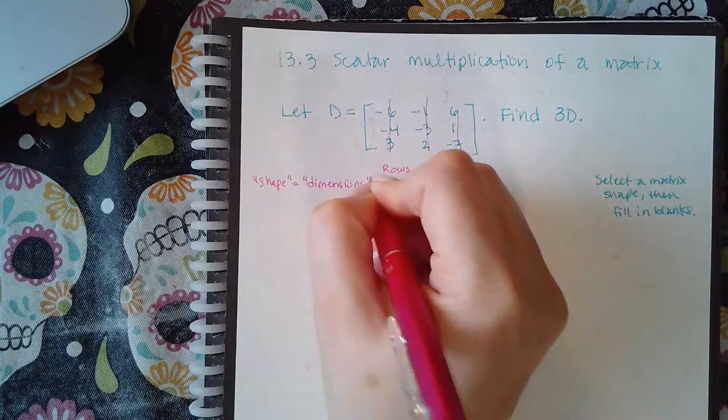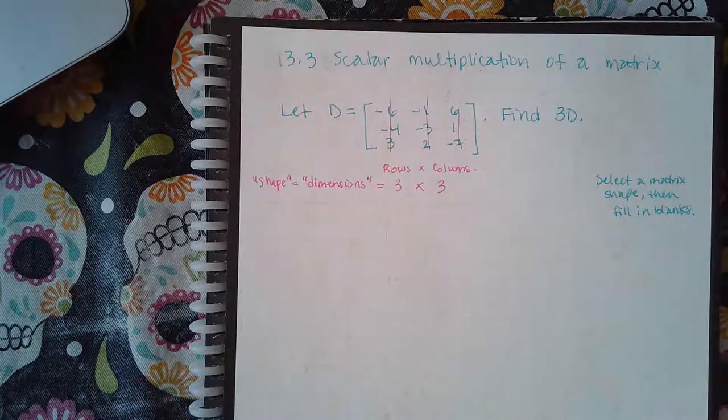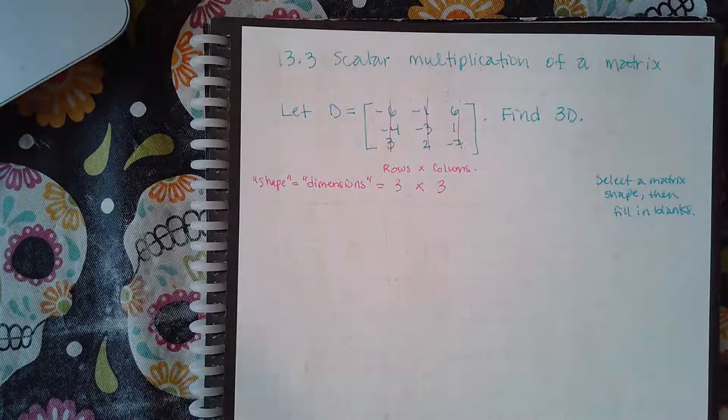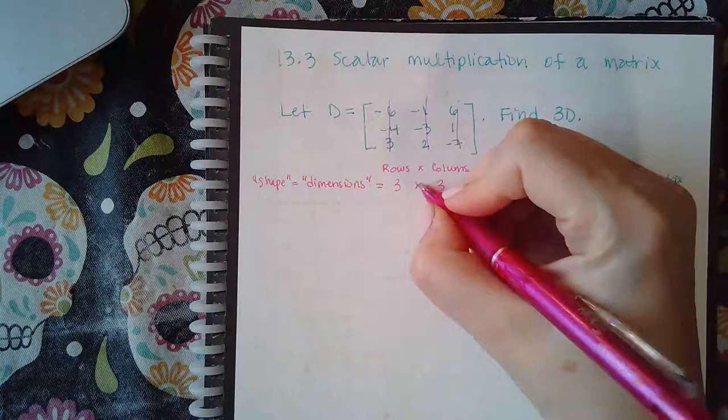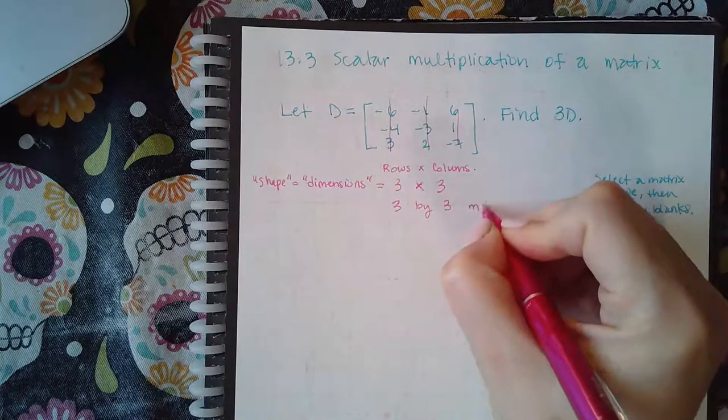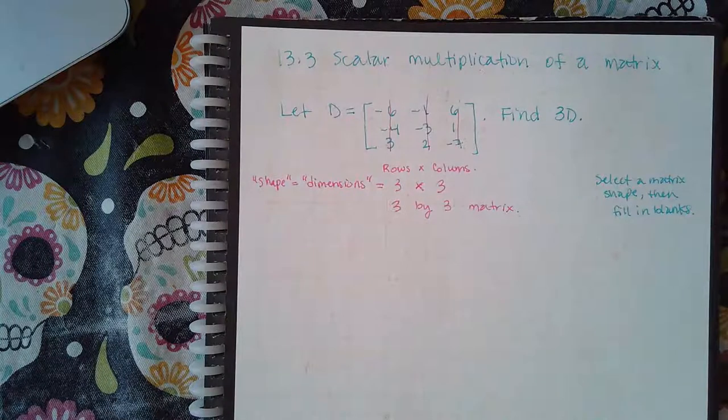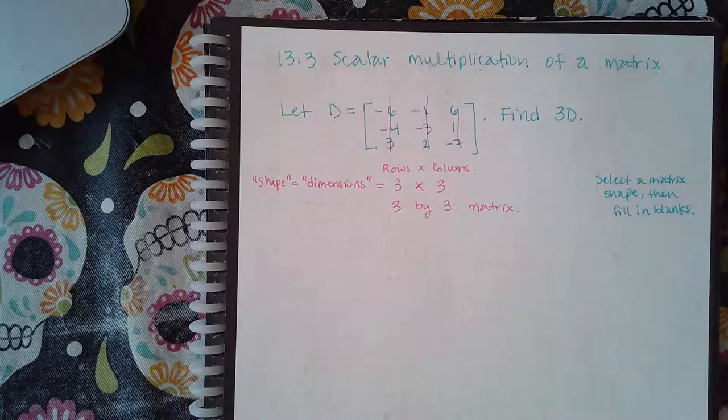So we definitely need to figure out dimensions, and dimensions is always the number of rows by the number of columns. This is not times, so this is a three by three matrix. And when you multiply by a scalar, just a regular number, it doesn't change the shape or the dimension of the matrix. So 3D will also be a 3 by 3 matrix.